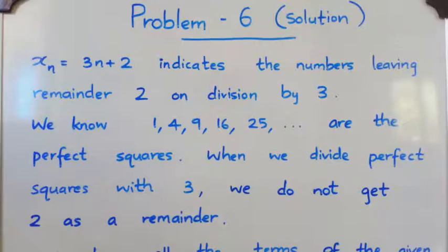That is, the numbers leaving remainder 2 on division by 3. Now what about perfect squares? 1 squared is 1, 2 squared is 4, 3 squared is 9, and so on. That is 1, 4, 9, 16, 25, etc. are the perfect squares.